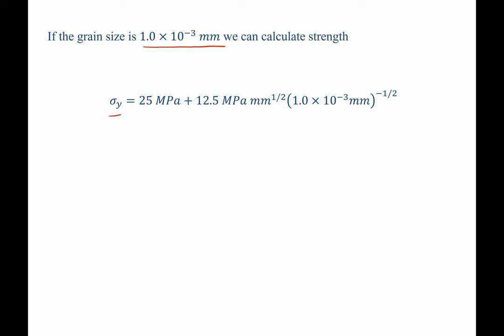So, the yield strength is what we're going to be solving for. Here's our two Hall-Petch coefficients that we solved for previously in Part A. We simply need to plug in 1 times 10 to the negative three millimeters, raise it to the negative one-half power, and then solve. When we solve for this, we find that this is actually equal to 420 megapascals.